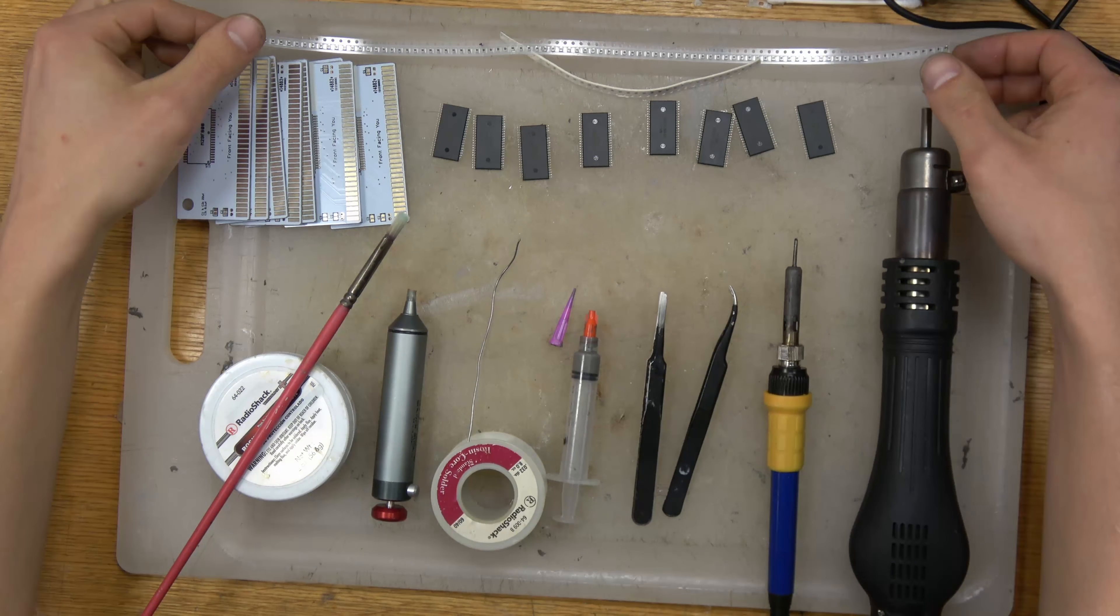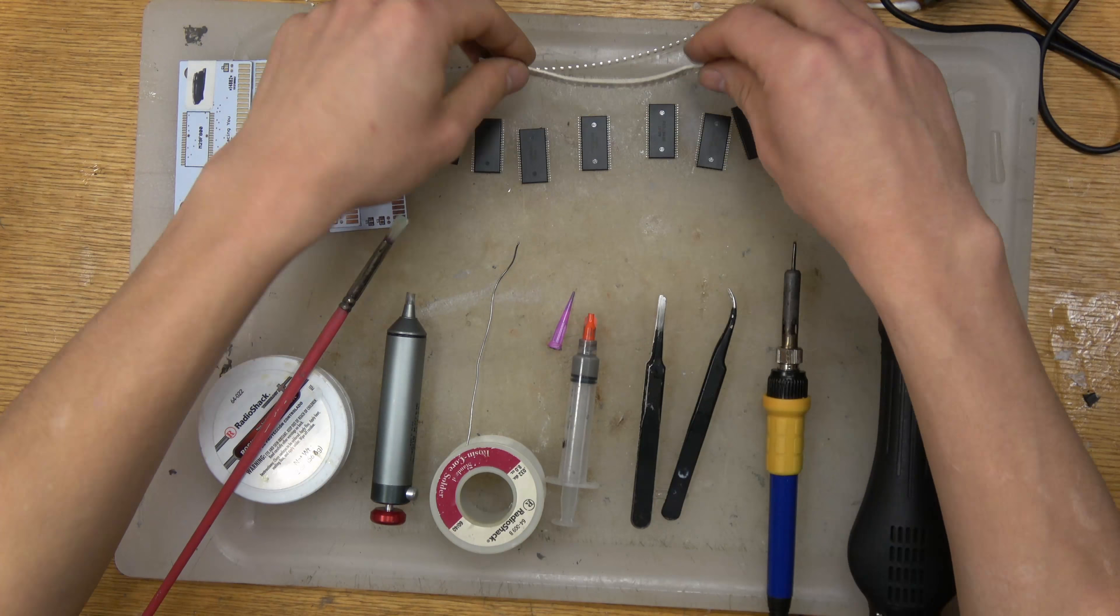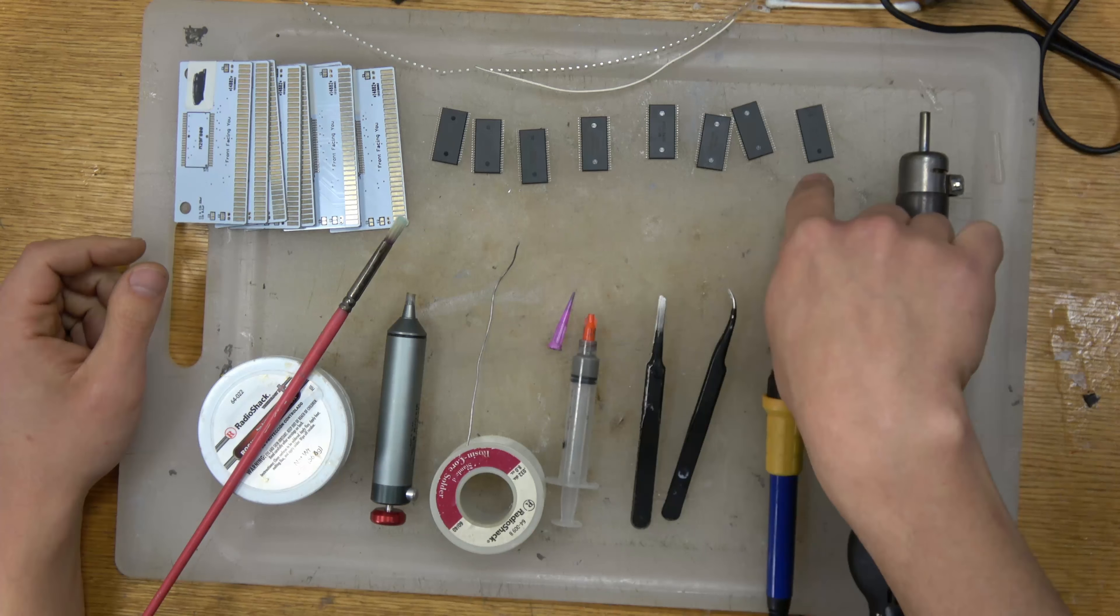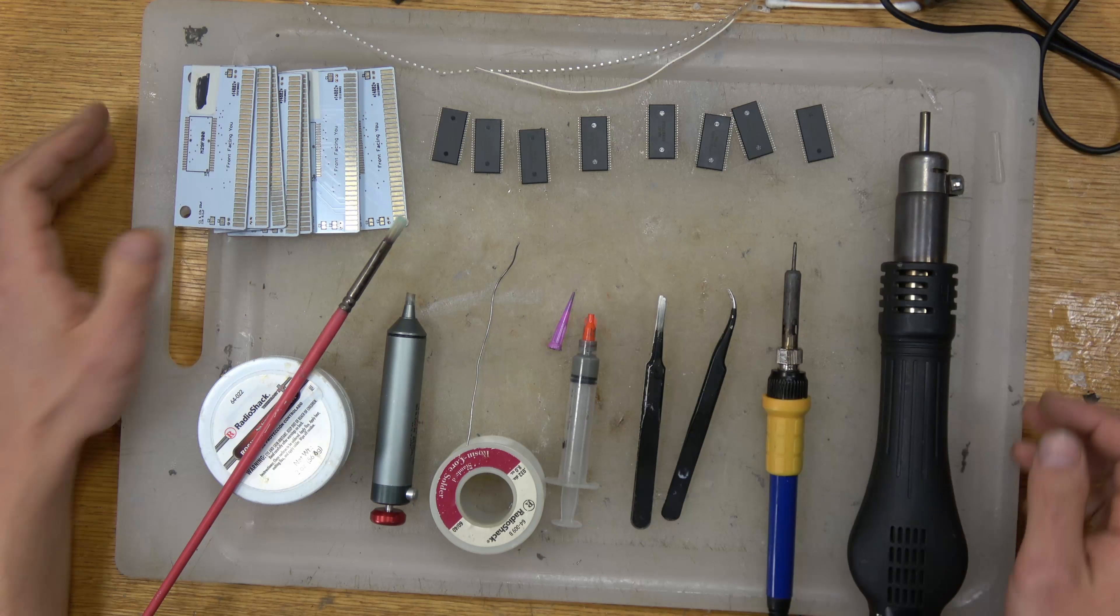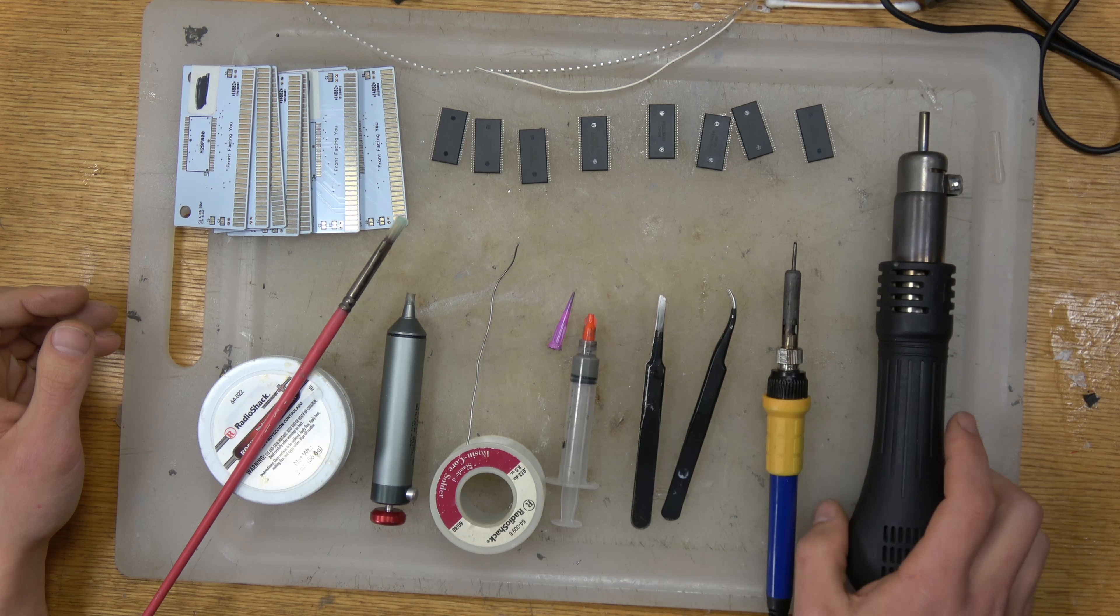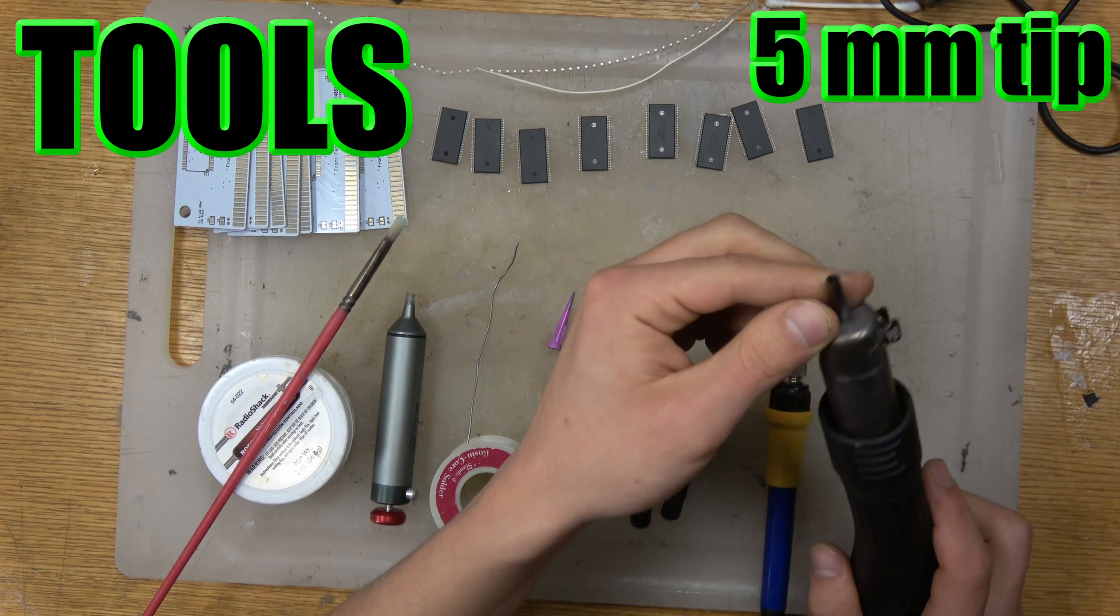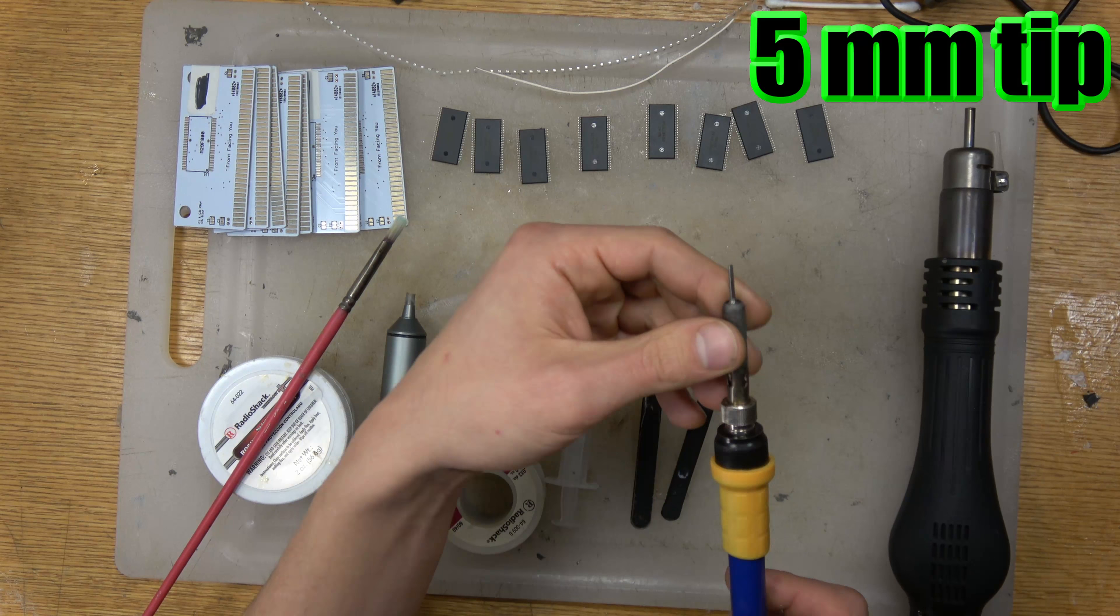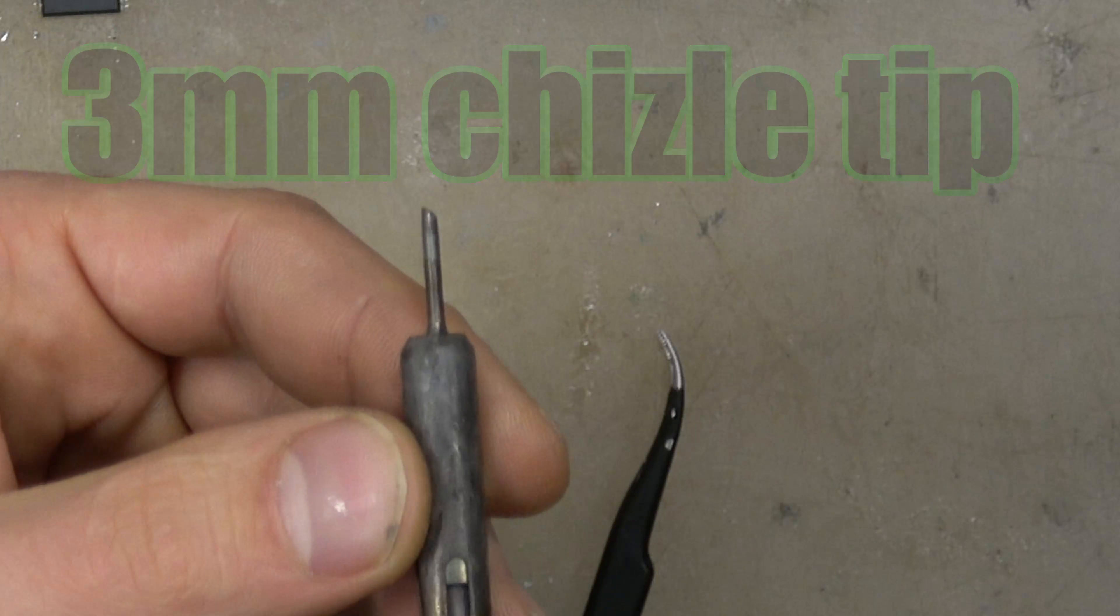First you need a project to be soldering so here we have some capacitors, the chips, and the PCB boards. We're gonna be surface mount soldering these. I'm gonna be using hot air with a 5 millimeter tip on it and my soldering iron with a 3 millimeter chisel tip.